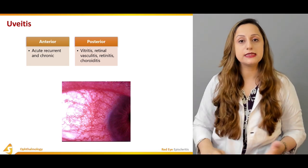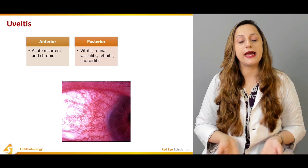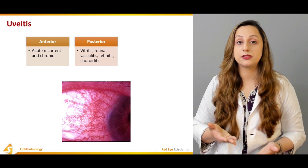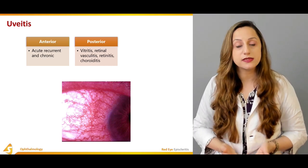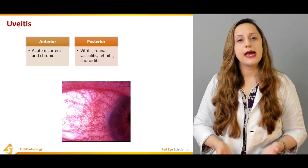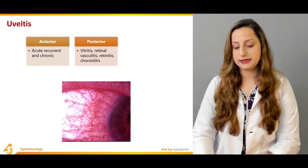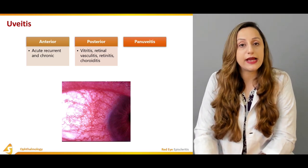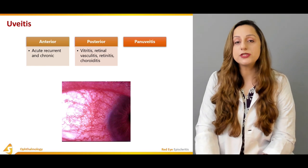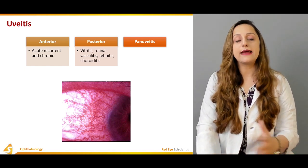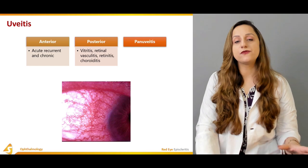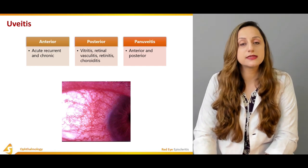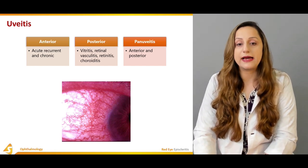Treatment for uveitis includes topical antibiotics and topical steroidal drugs. The prognosis is quite good and outcomes are promising. Pan-uveitis is basically the involvement of both anterior and posterior structures — the complete involvement of all the uveal apparatus — and is the combined form of anterior and posterior uveitis.